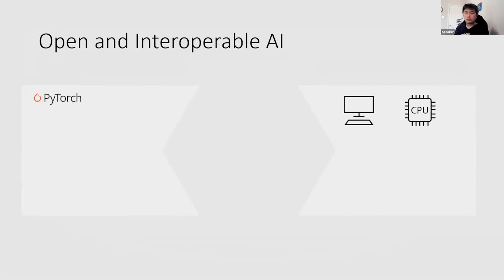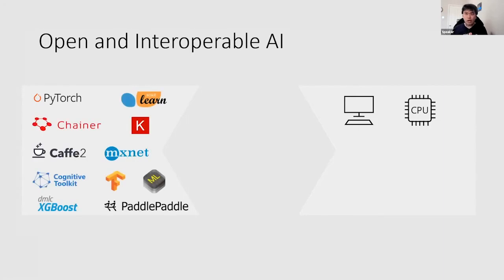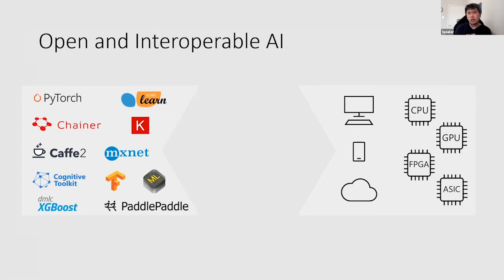Typically in machine learning there are many frameworks available. You might write it in PyTorch and run it locally on your machine. There are a bunch more machine learning frameworks out there — just like JavaScript has many frameworks. When you try to deploy these machine learning models, you have to figure out where to deploy: CPU or GPU, your phone, the cloud, or IoT devices.